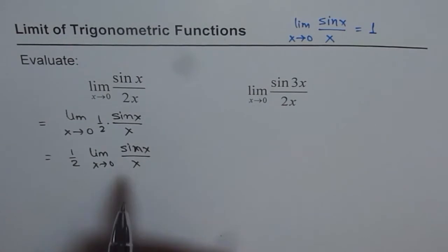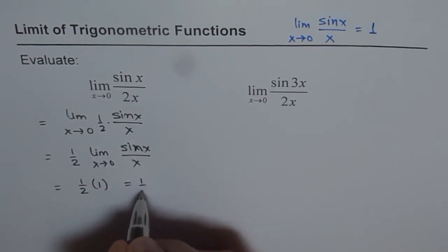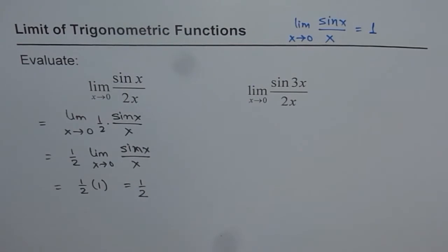Now the fundamental limit is that limit of sin x over x as x approaches 0 is 1. So what do we get? We get half times 1, which is half. So we get our first answer.